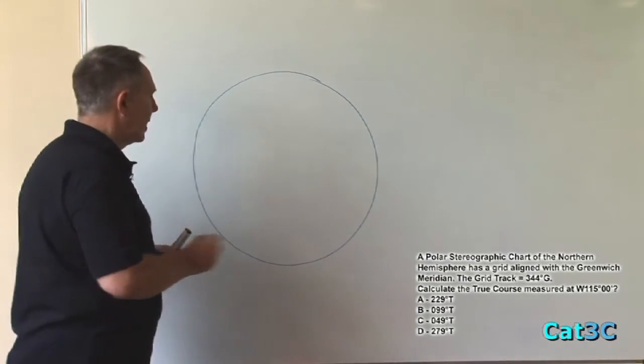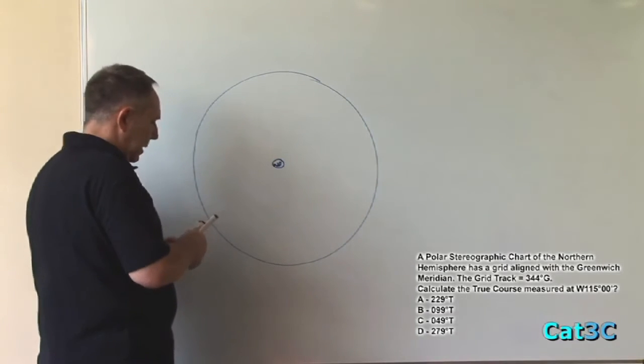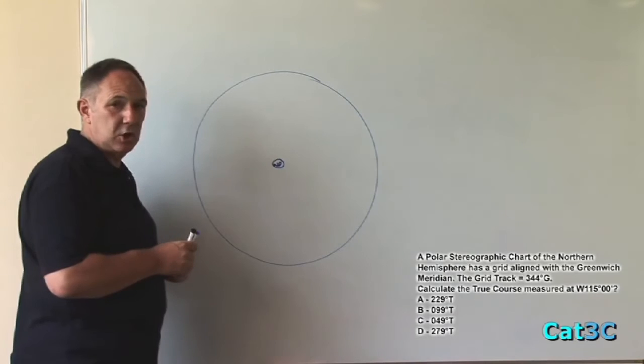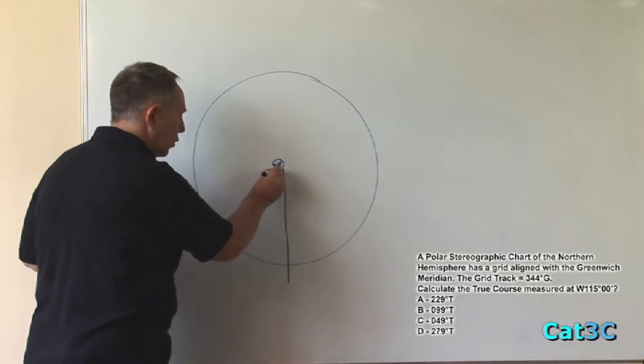We know this is the Northern Hemisphere, so we place the North Pole in the centre and the Greenwich Meridian runs up the page into the North Pole. Remember, all meridians point to north.